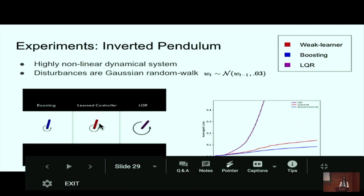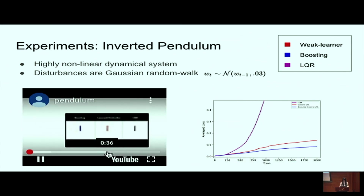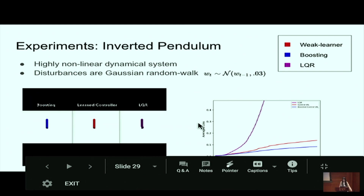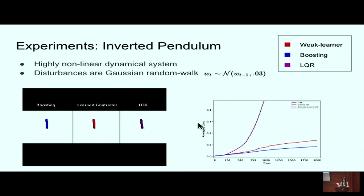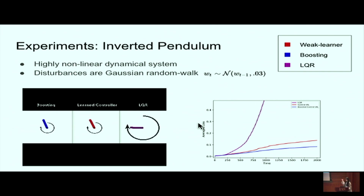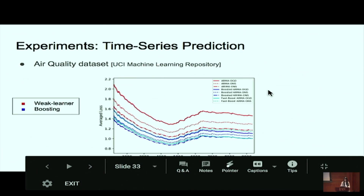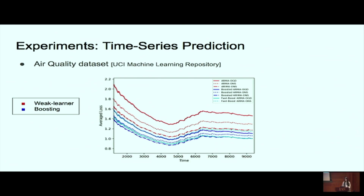In an inverted pendulum experiment — stabilizing a pendulum in a vertically upright position with Gaussian random walk noise — LQR performs much worse than the weak learners, and boosting can improve even the already-good weak learner performance. For time series prediction experiments using a UCI machine learning repository dataset, we tried a bunch of weak learner time series predictors and boosted them. Weak learners are the red lines, boosting results are the blue lines — and we see improvements in that setting as well. Thank you.